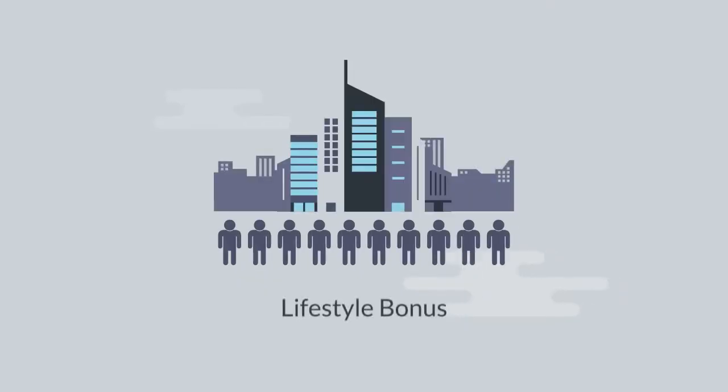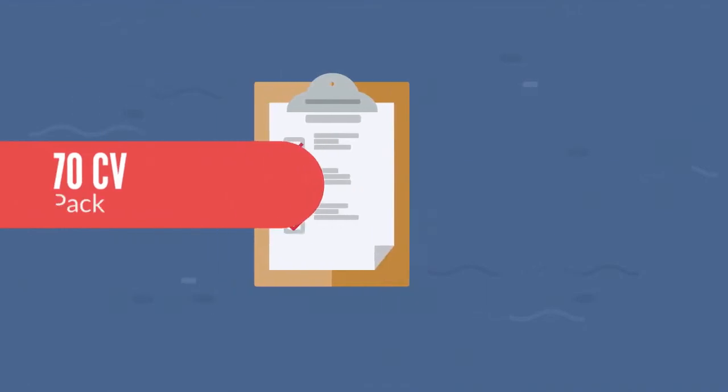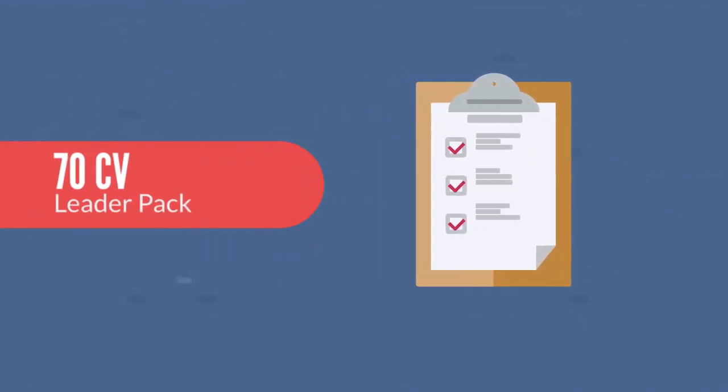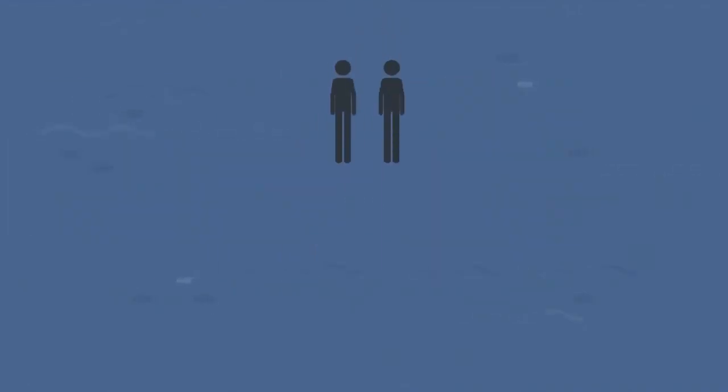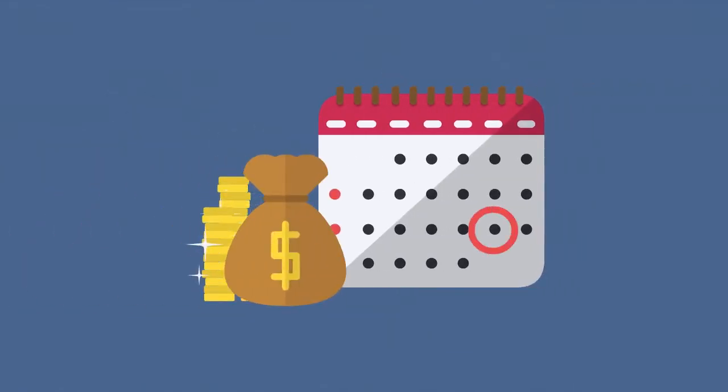Our third bonus is called the lifestyle bonus. This bonus is centered around a personal $70 CV order from any one of our leader packs. For example, Elevate and Accelerate is a 70 CV leader pack. The first lifestyle bonus is our two-by-two. You personally enroll two brand partners that order a leader pack, and they personally enroll two brand partners that order a leader pack, and that's an additional $100 monthly lifestyle bonus.